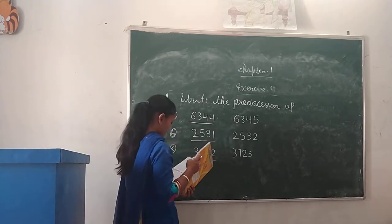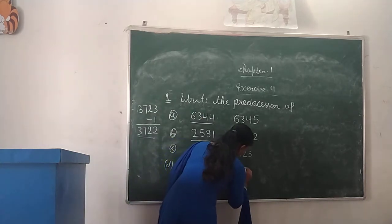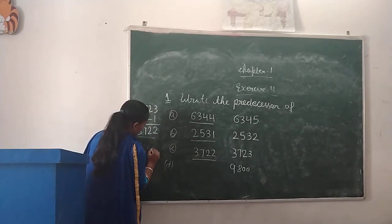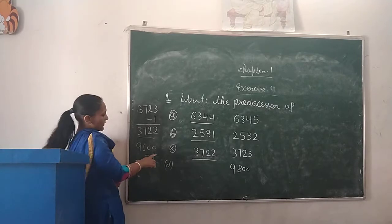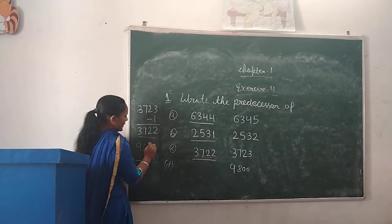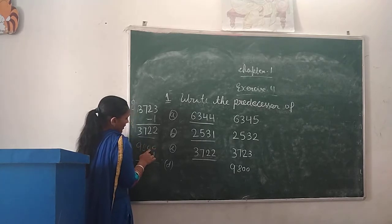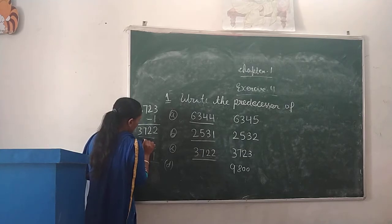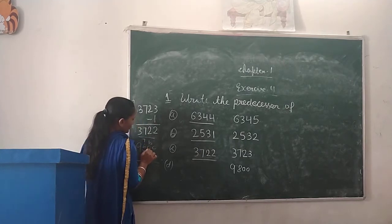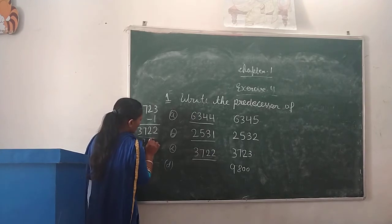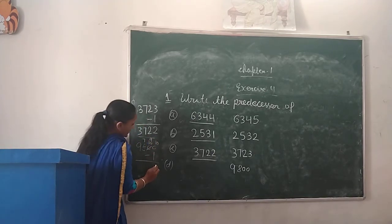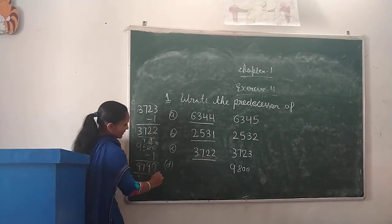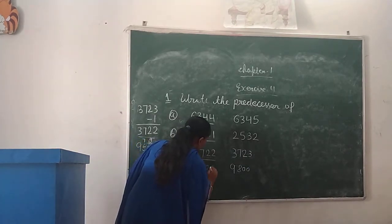Next, Part D: 9,800. We will subtract 1. We cannot subtract 1 from 0, so we take a borrow from the next digit. Here we have 10. 10 minus 1 is 9, 9 minus 0 is 9, then 7, then 9. So the predecessor is 9,799.